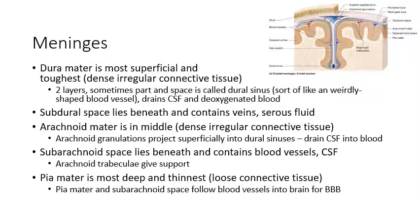Starting with the meninges: three membranes that surround the brain and spinal cord. The outermost, which is the thickest, is the dura mater. It's made of dense regular connective tissue and has two layers. The most superficial layer is actually considered part of the periosteum of the skull. In certain places within the skull, those two layers separate, and between them you have the dural sinuses, where cerebrospinal fluid drains.